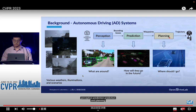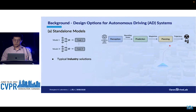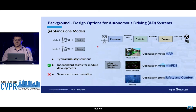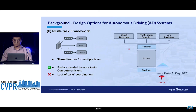The perception part focuses on accurate observations. The prediction part imagines the future states of the environment. The planner makes decisions and plans a final route. Typical industrial solutions would be stand-alone models, where each module is trained independently and optimized for different objectives — this leads to accumulated errors. The multi-task framework has a shared backbone for multiple tasks, making it efficient, but each task head is trained separately without coordination.